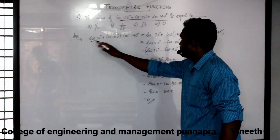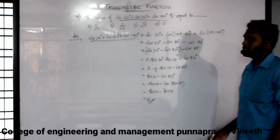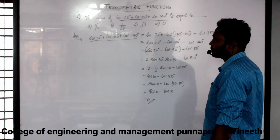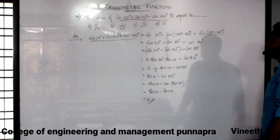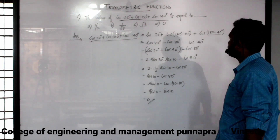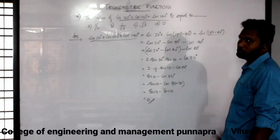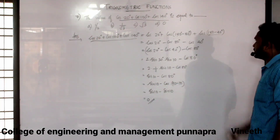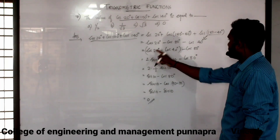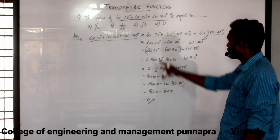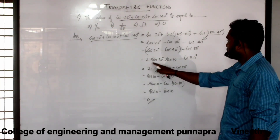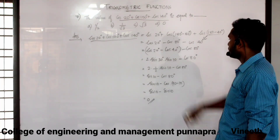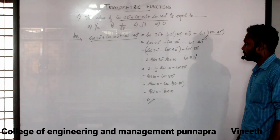100 degree equals 180 minus 80, and 140 degree equals 180 minus 40. We have cos 20, cos(180 minus 80), cos(180 minus 40). These become minus cos 80 degree and minus cos 40 degree. We use the formula cos A minus B equals cos A cos B plus sin A sin B, applying sin(A plus B)/2 and sin(A minus B)/2.